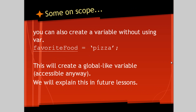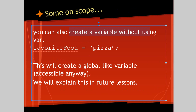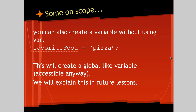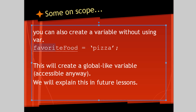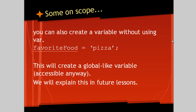You can create a variable without using the keyword var and just automatically assign it a value. This will create a global-like variable, which basically just means it's accessible anywhere within your script. I'm not going to explain this too much right now because it would make this video too long and I need an entire video to explain that concept. Just know you may see variables that are not defined with var, and this is different than declaring it the standard way — they're not exactly the same. That's something you need to know.